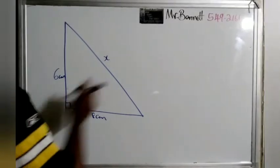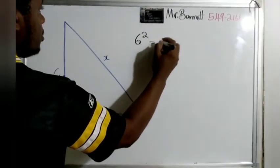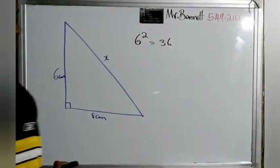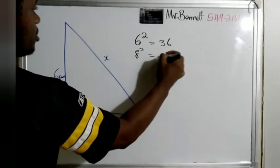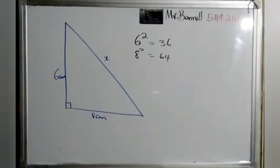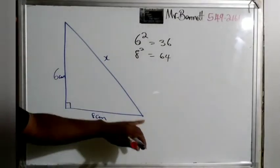If we do the same thing for an 8 by 8 square, we will get 64. We know that when you add this and this, we're supposed to get the side of this.